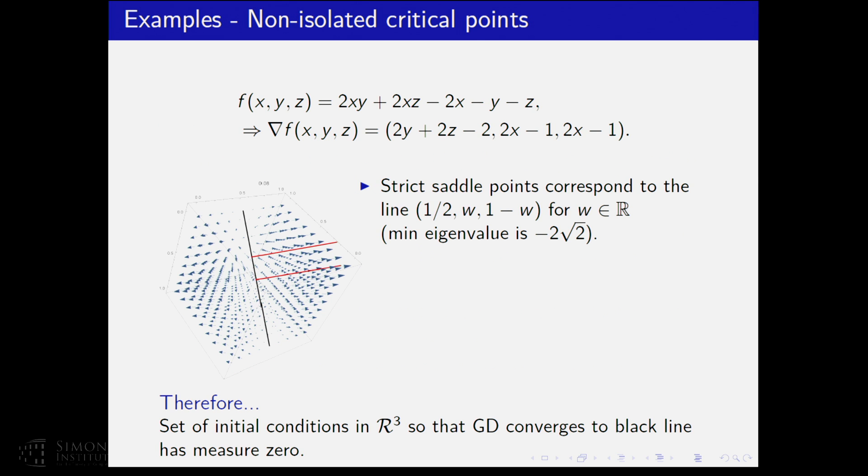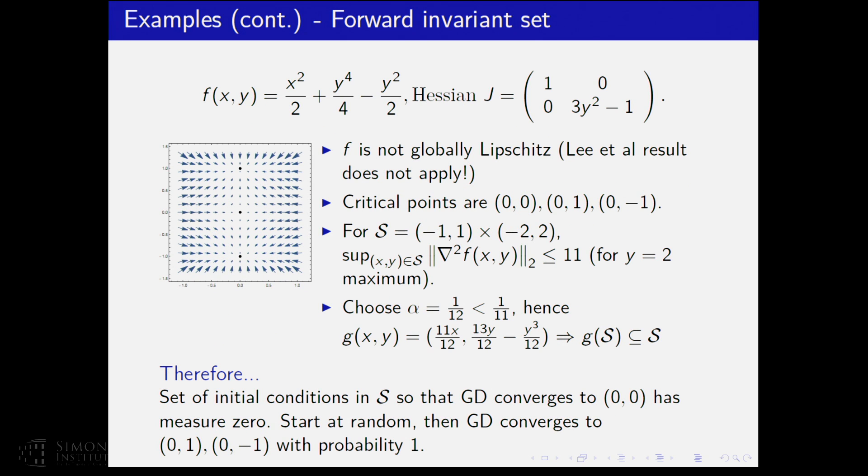So, here is an example. The black line here is a continuum of fixed points. Our theorem can be applied here, and we can show that the set of initial conditions in R^3 so that the gradient converges to the black line has measure zero. This is also another example, a four-degree polynomial.